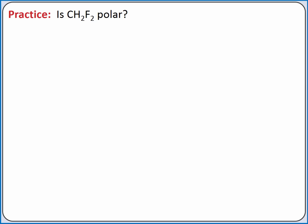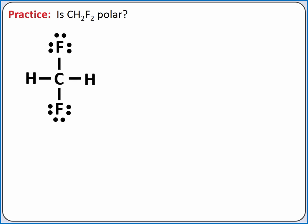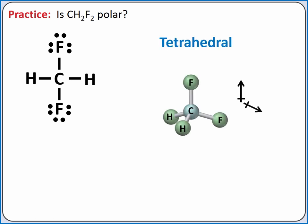In our next example, we'll determine if CH2F2 is polar or nonpolar. We'll start by drawing the Lewis structure. We have two polar carbon-fluorine bonds. Although from this Lewis structure it looks like the two polar bonds could cancel each other out, we need to remember that the Lewis model is a two-dimensional model. It only shows what atoms are bonded and where our valence electrons are located. To determine if the two polar bonds cancel, we need to consider the three-dimensional molecular geometry. Our molecular geometry is tetrahedral, so these two bonds are at an angle of about 109.5 degrees. They cannot cancel each other out, so our molecule overall is polar.